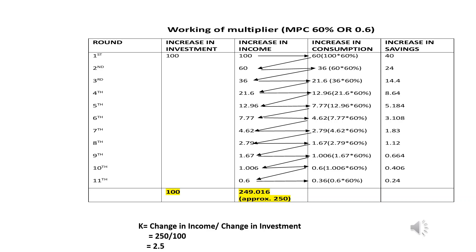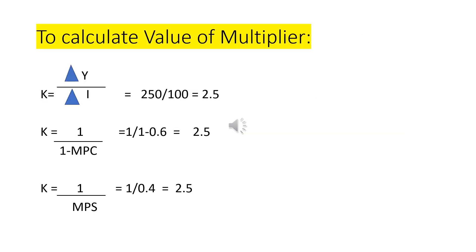By applying the first formula — Change in Income / Change in Investment — we can calculate the value of the multiplier, which comes out approximately equal to 2.5. We can verify that whatever formula we employ to calculate the value of K, the answer will be the same: K = 2.5.